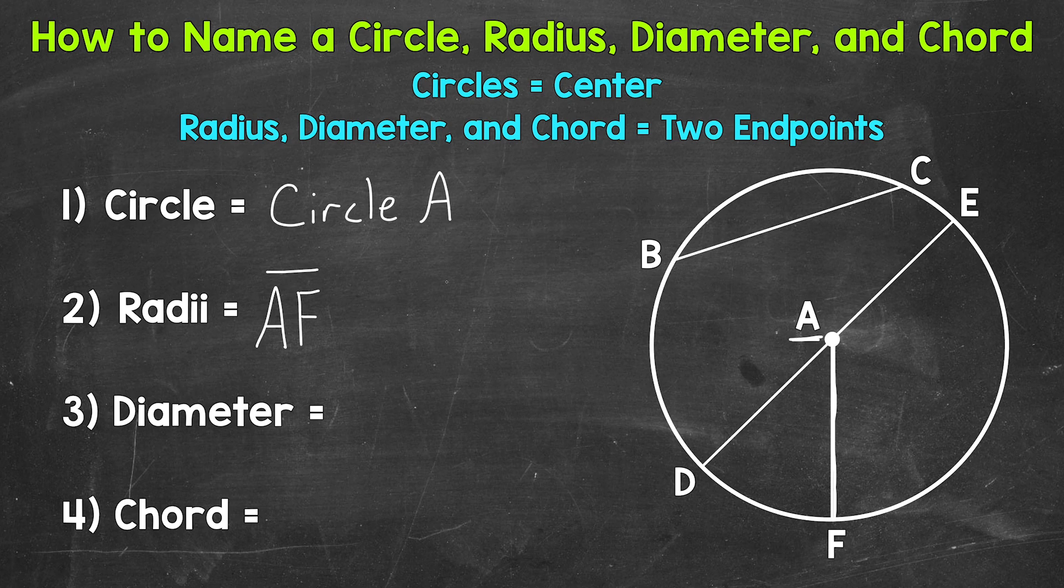Now there are two other radii within our example. Let's start in the center and work our way to point E to show another example of a radius. We name this by the endpoints, so A, E, and then put the line segment symbol above our two endpoints.